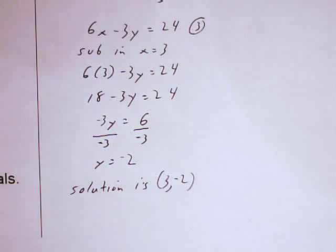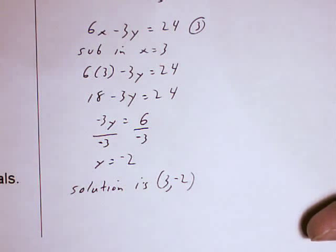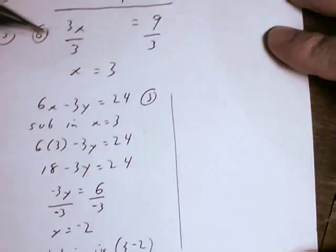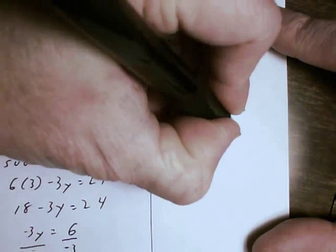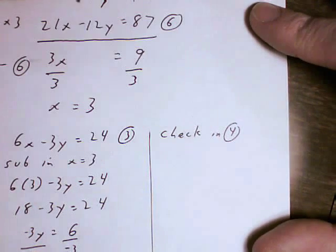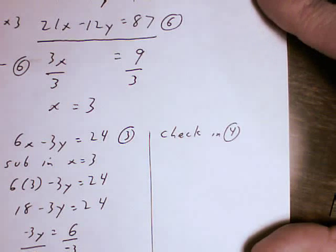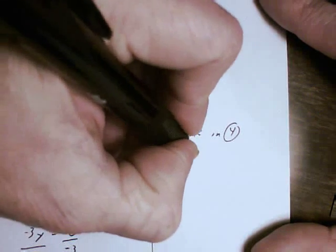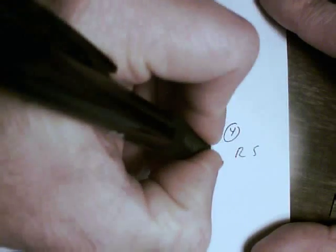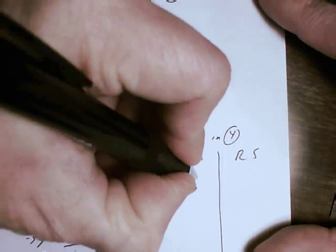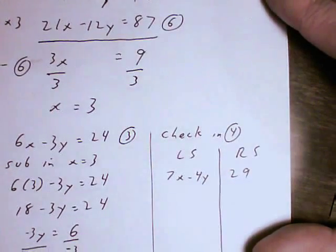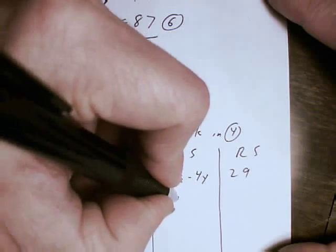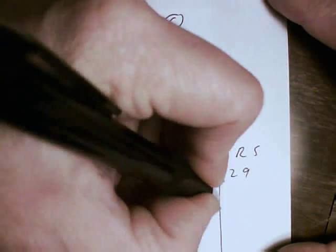I will now check that solution in equation 4. I'm going to use a different equation so that I can make sure I didn't make a mistake. So let's sub in x equals 3 and y equals negative 2 in equation 4. Left side, right side check. 7 times 3 minus 4 times negative 2.